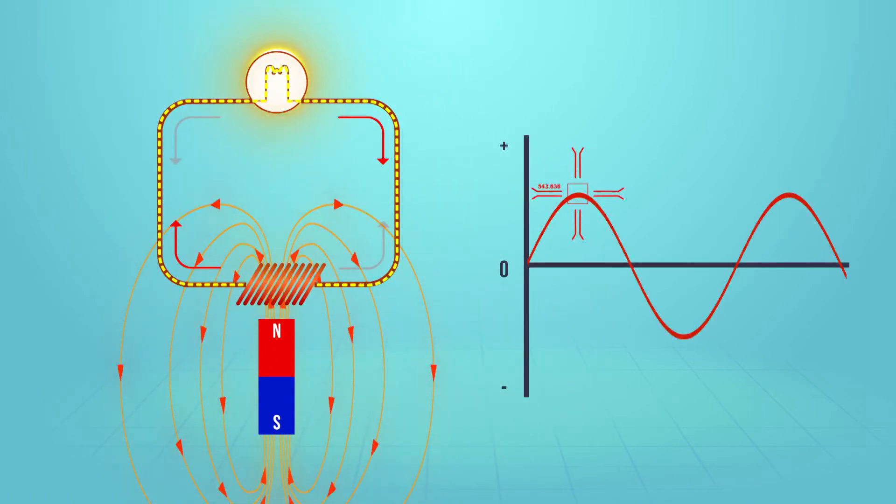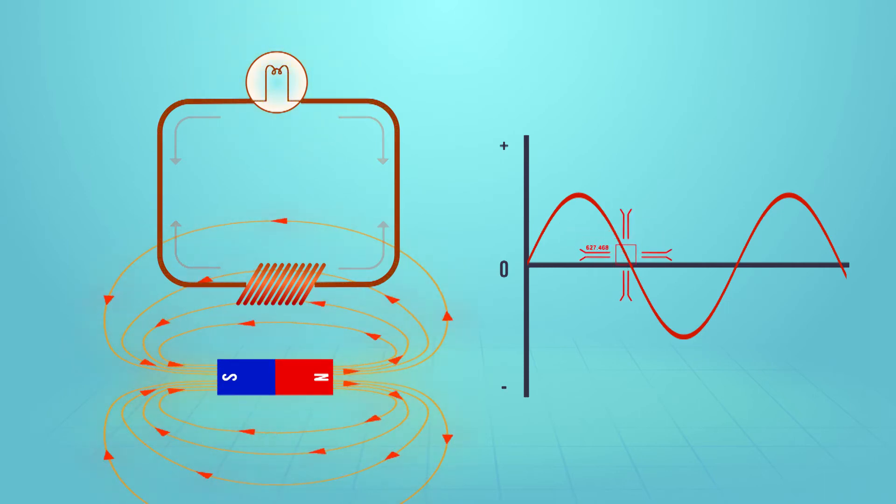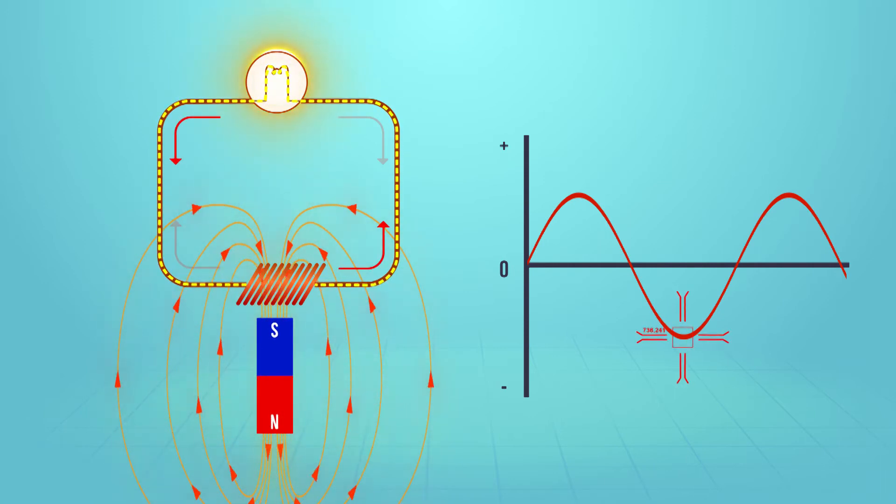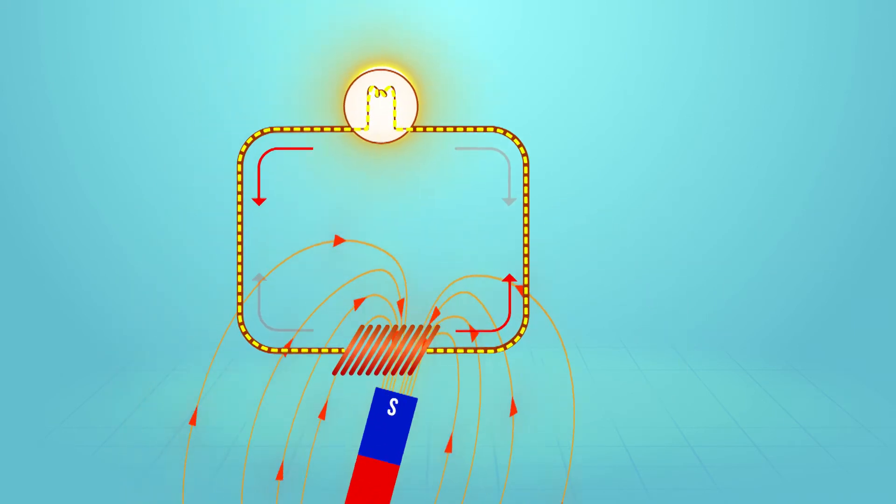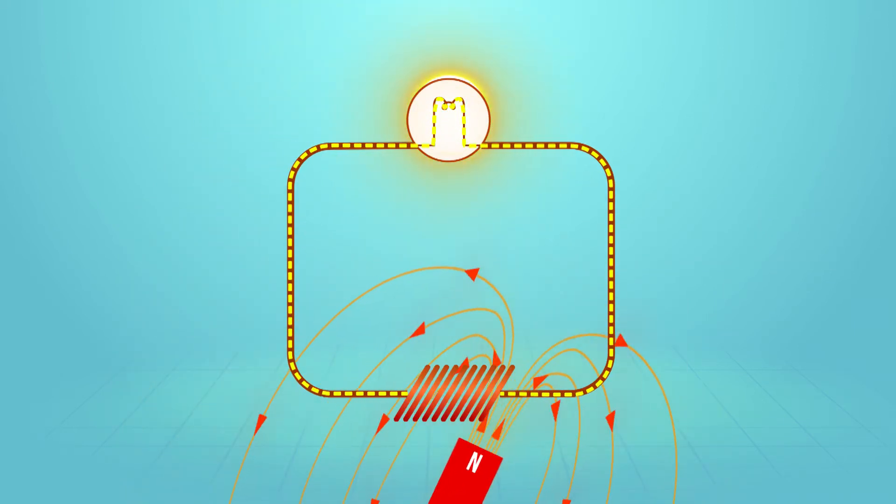As the pole continues past this point, current levels drop to zero. Rotation of the magnet brings the next pole into range and current levels build again, although in the opposite direction. A light connected to the circuit will pulse in time with the rotating magnetic field. The faster the rotation, the quicker the pulsing effect.